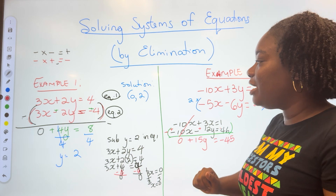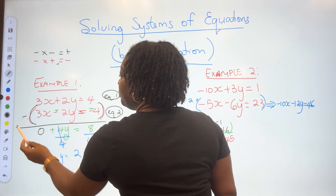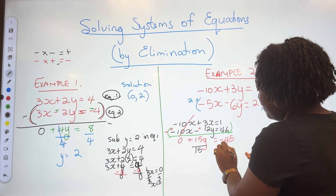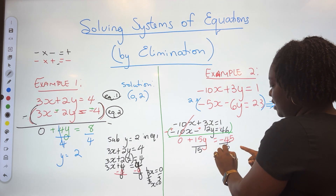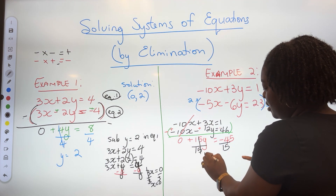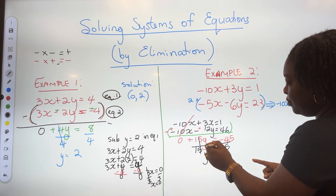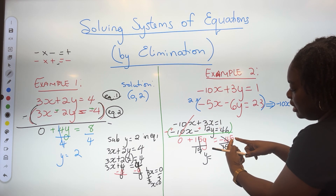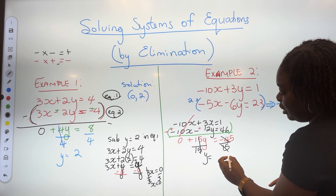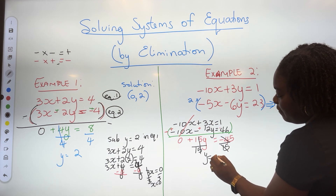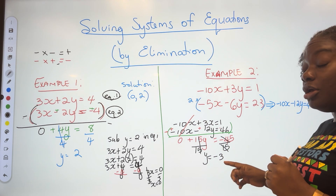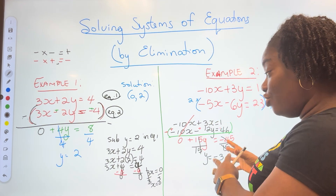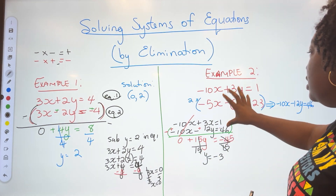Now that we have that, we can solve for y. We have 15y equals negative 45, so we divide both sides by 15. 15 divided into 15 is 1, and 15 into 45 gives 3, so y equals negative 3.